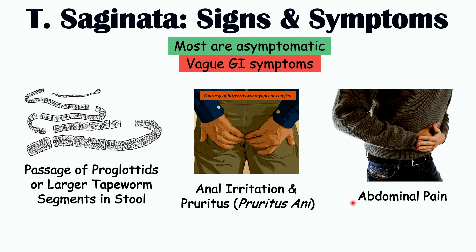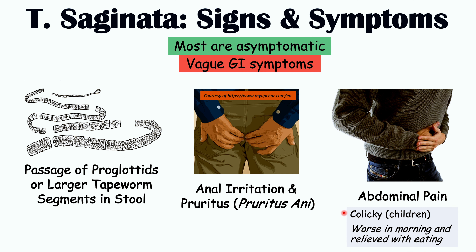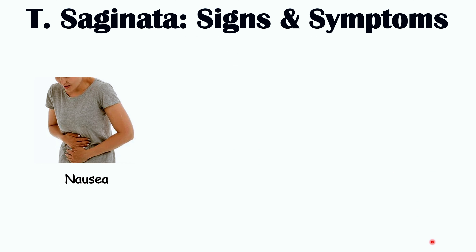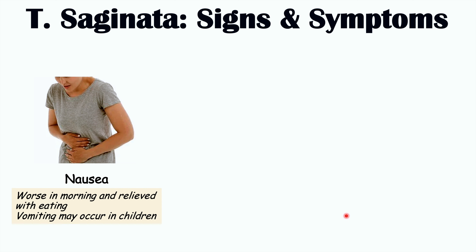Patients can also have abdominal pain, which has a colicky characteristic in children — coming and going in a wave-like manner. It is worse in the morning and relieved with small amounts of eating. Nausea is another important symptom, and likewise it is worse in the morning and relieved with small amounts of eating. Seeing abdominal pain and nausea that are worse in the morning and relieved with small amounts of eating may be a sign of infection with this particular tapeworm.